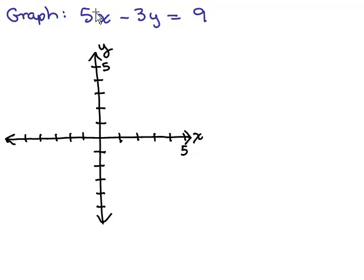Here's the next problem. Graph 5x minus 3y equals 9. It's true you can also do the x and y intercept method here, but you will get a fraction for the x-intercept. So I'm going to do this using the slope intercept method by solving for y.